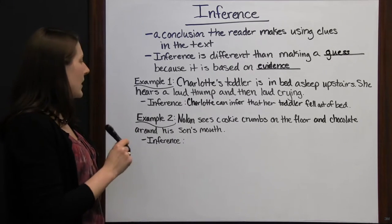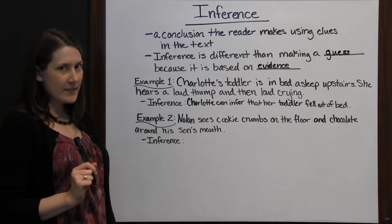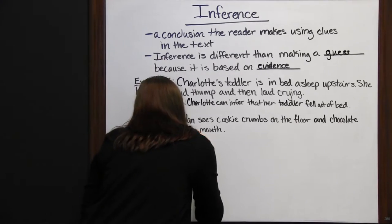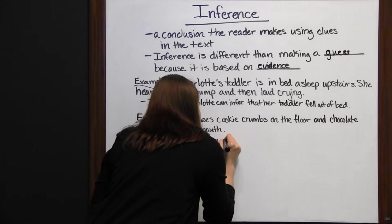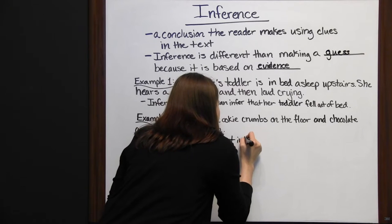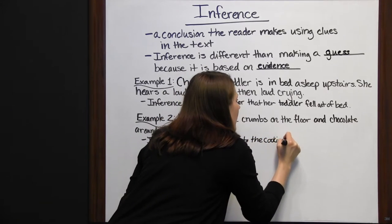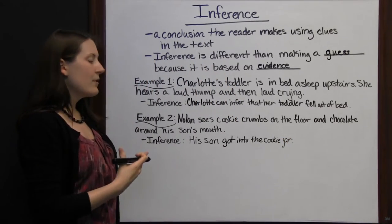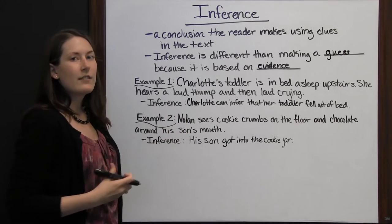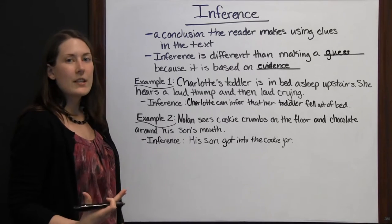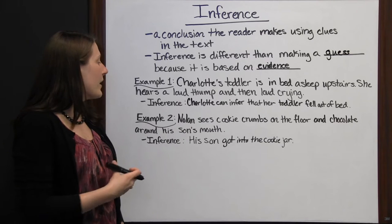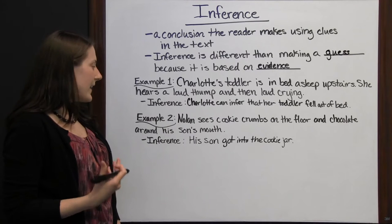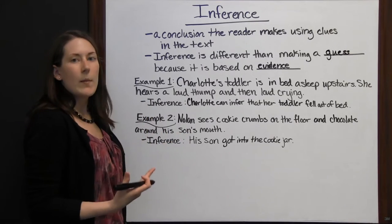Let's look at another example. Nolan sees cookie crumbs on the floor and chocolate around his son's mouth. Cookie crumbs on the floor and chocolate around his mouth is going to tell you that Nolan's son got into the cookie jar. You don't really know the rest of that, but you just know that if there are cookie crumbs on the floor and chocolate around his son's mouth, the kid got into cookies somehow. You can infer he got into a cookie jar or a pack of cookies without the author explicitly saying that to you.